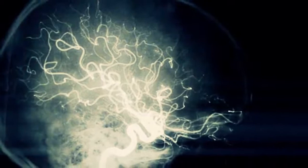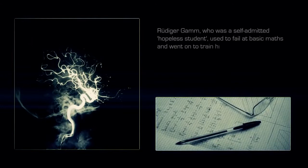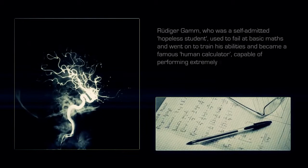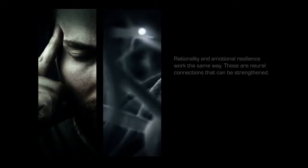Virtually any sort of talent or skill can be created through training. Rüdiger Gamm, who was a self-admitted hopeless student, used to fail at basic math and went on to train his abilities and became a famous human calculator capable of performing extremely complex mathematics. Rationality and emotional resilience work the same way. These are neural connections that can be strengthened. Whatever you are doing at any time, you are physically modifying your brain to become better at it.